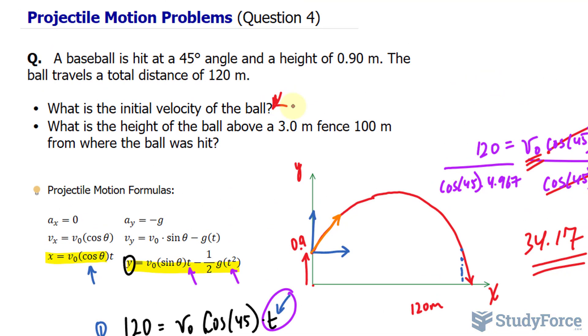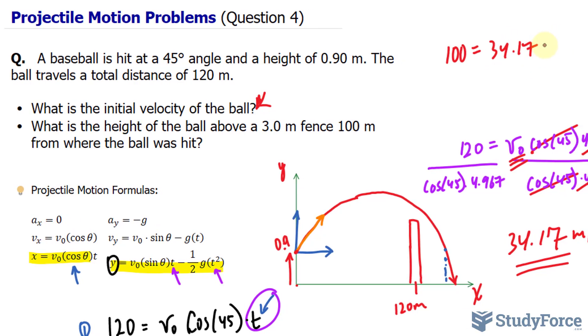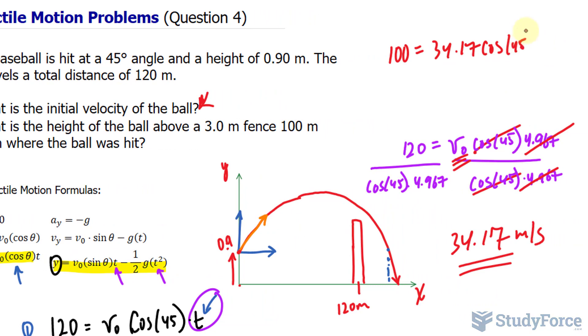For the second part, what is the height of the ball above a 3 meter fence, 100 meters from where the ball was hit? So, let's say that is 100 meters from here, from where it was hit. And, we know that it's going to cross this 3 meter fence. We just want to know the height of the ball. What I can do is, again, use this formula shown here and find out the time that it takes to reach 100 meters. So, I'll replace x with 100 is equal to the initial velocity. This is why it's important to find it. 100, cosine 45 times t.